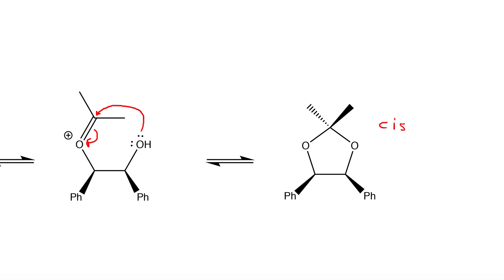As you can see here, the cis-acetonide will only form if the meso stereoisomer of hydrobenzoin hydroxide was present after the reduction reaction of benzyl.